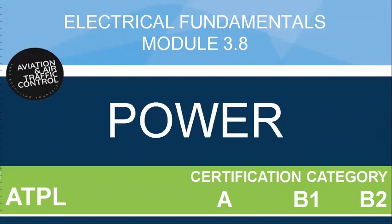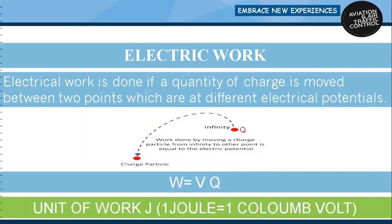Hi viewers, welcome back. This lecture is about electrical power. Electric work is done if a quantity of charge is moved between two points which are at different electrical potentials. The formula for electrical work is W equals V times Q, where W stands for electrical work, V is the potential difference, and Q is the charge.